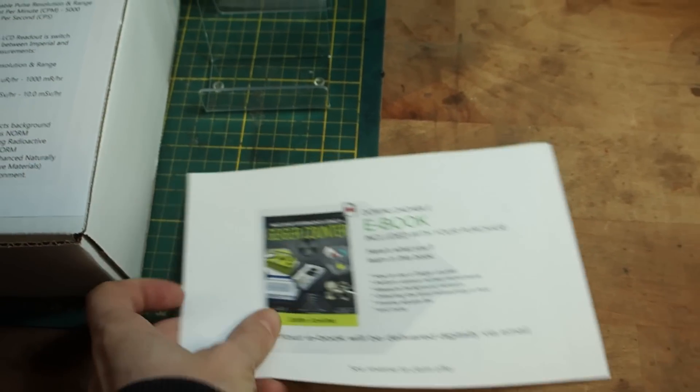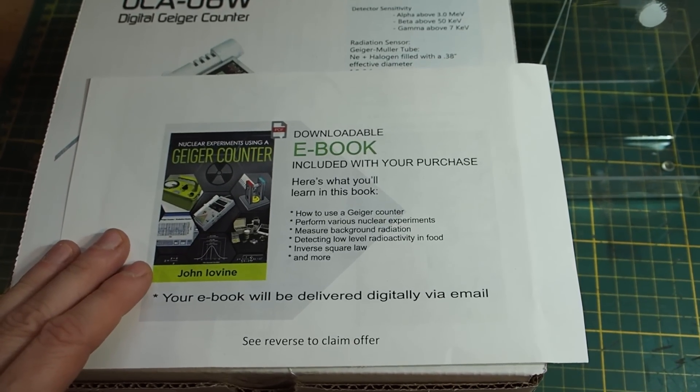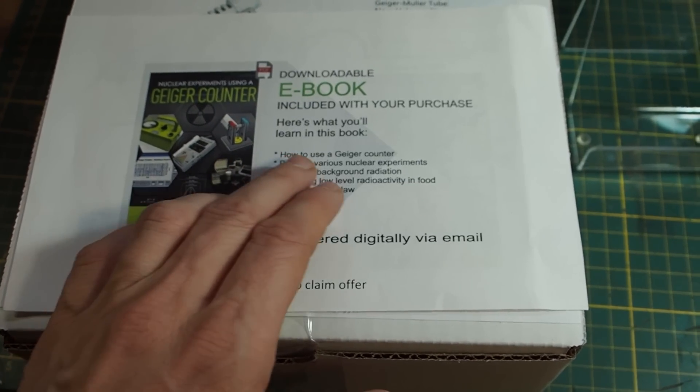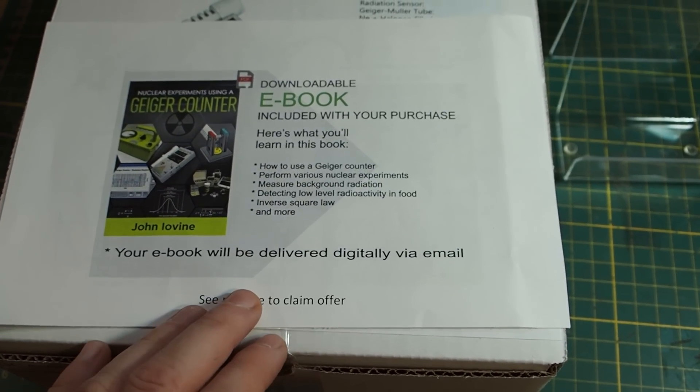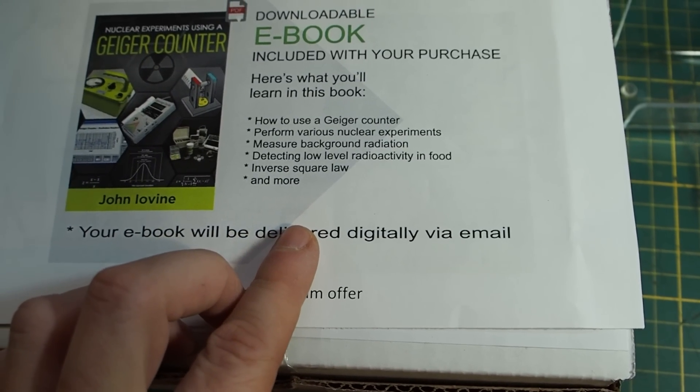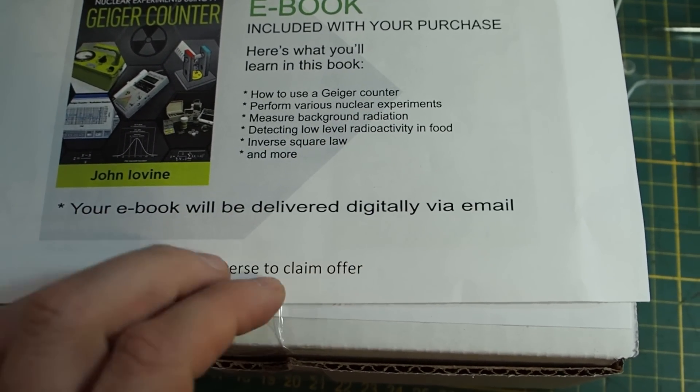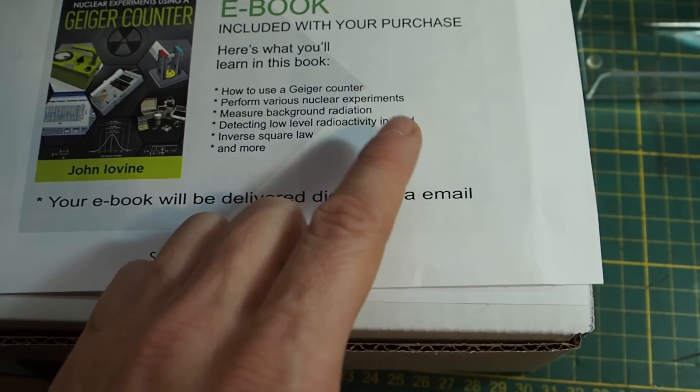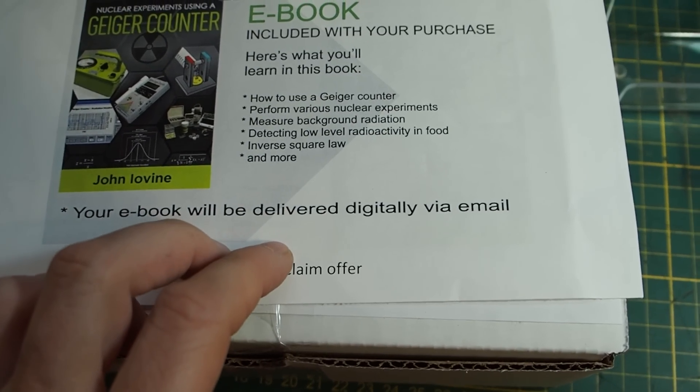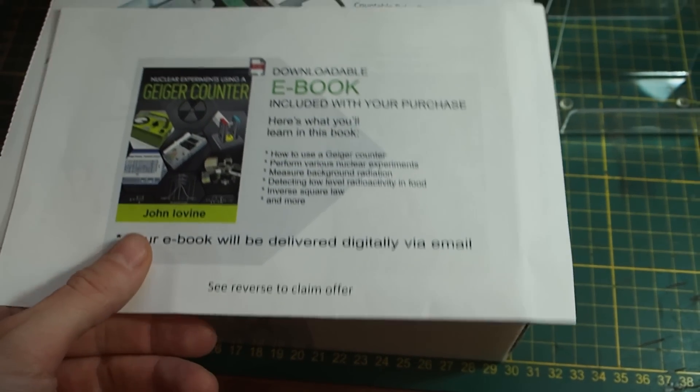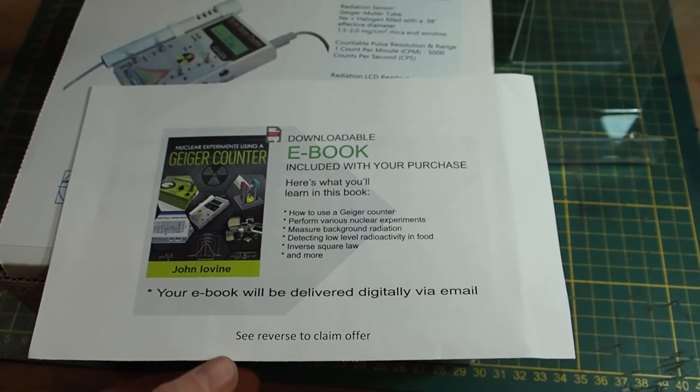Besides the Geiger counter you will also get a downloadable e-book which is included with your purchase. With this e-book you can learn how to use a Geiger counter, how to perform various nuclear experiments, how to measure background radiation, detecting low-level radioactivity in food which is really important. You will learn about the inverse square law and more. So that's a pretty awesome book and I will definitely get it.